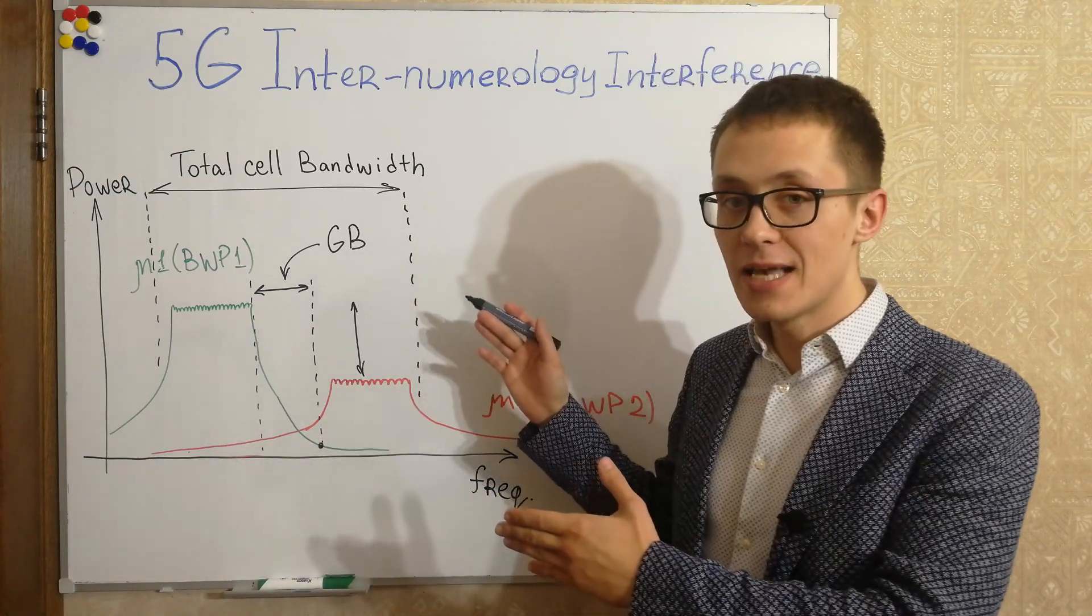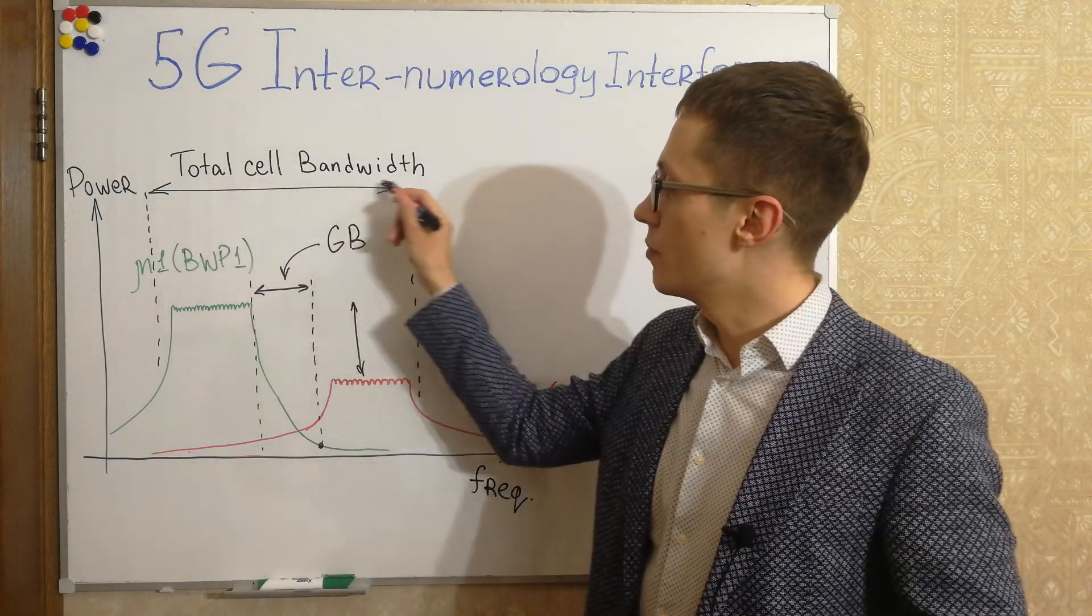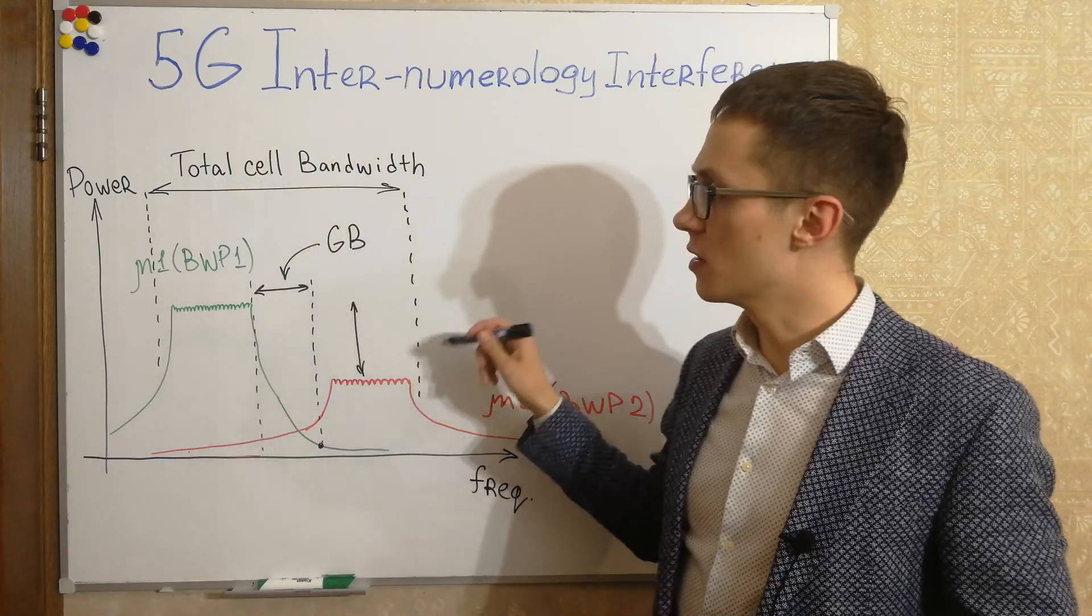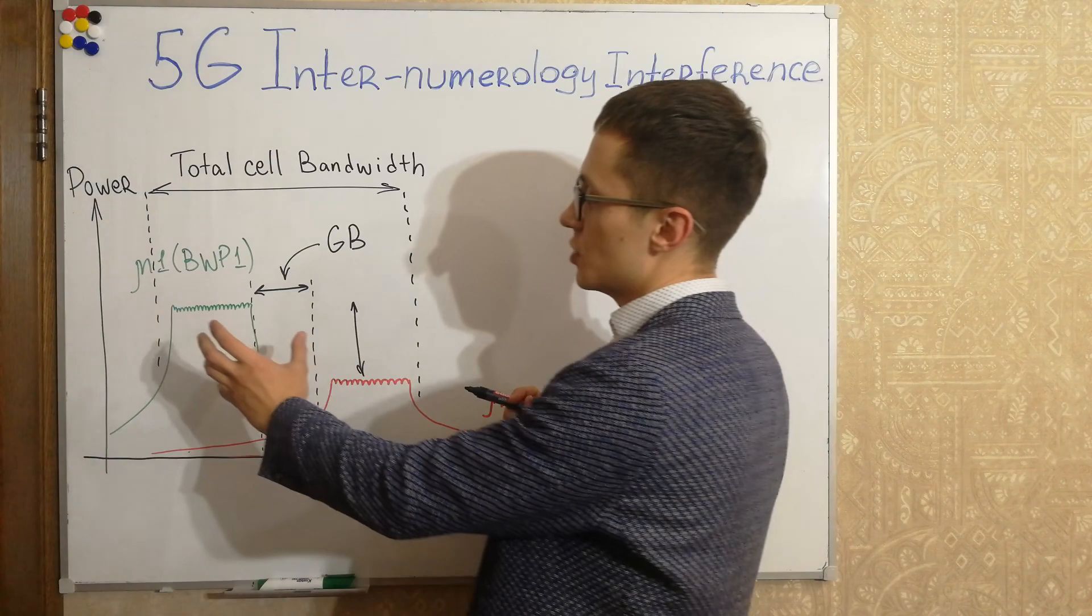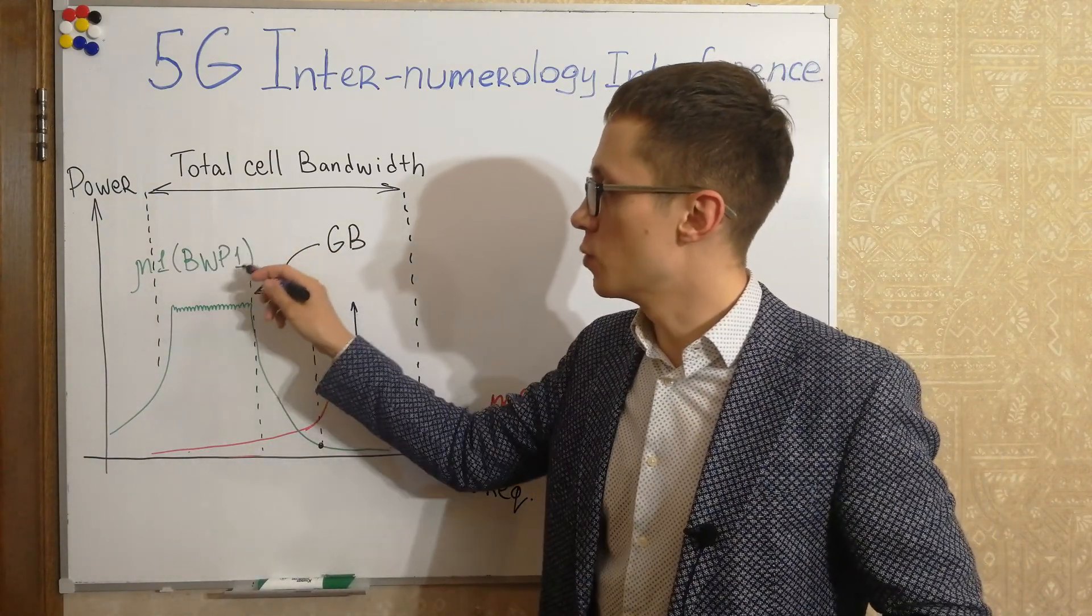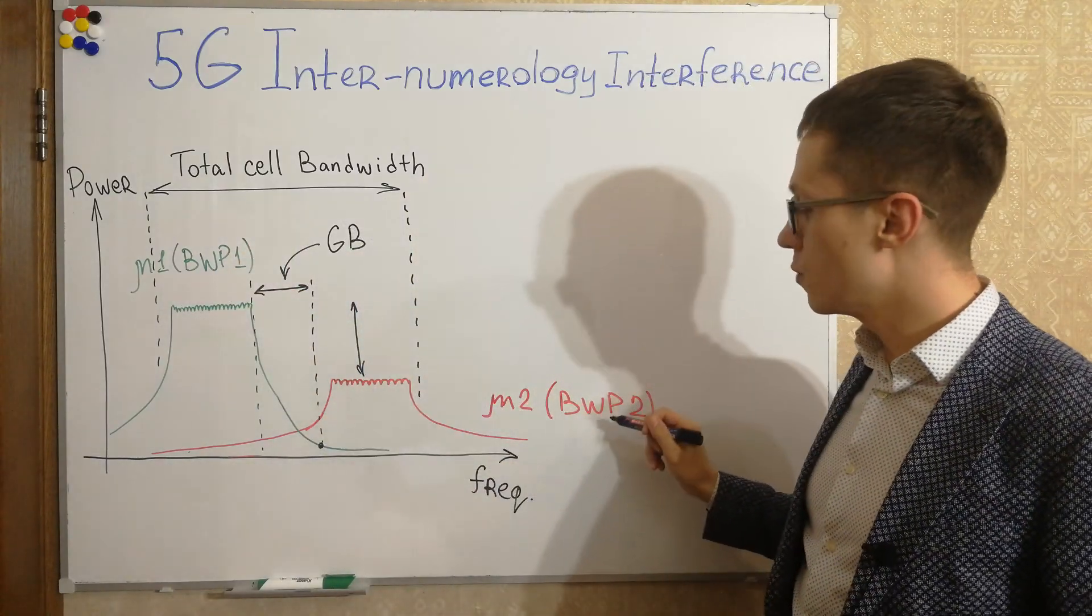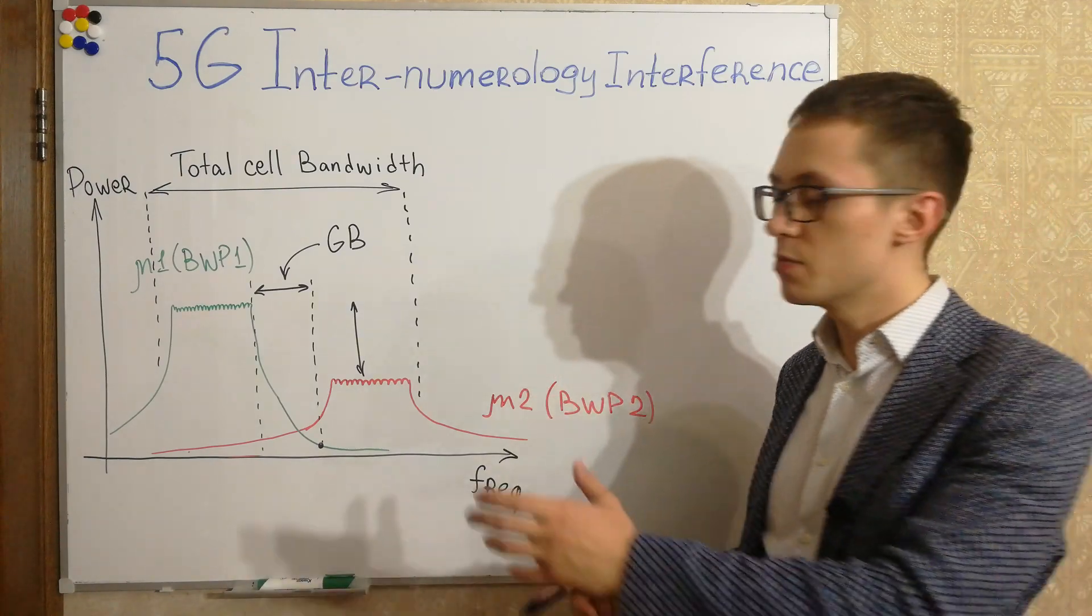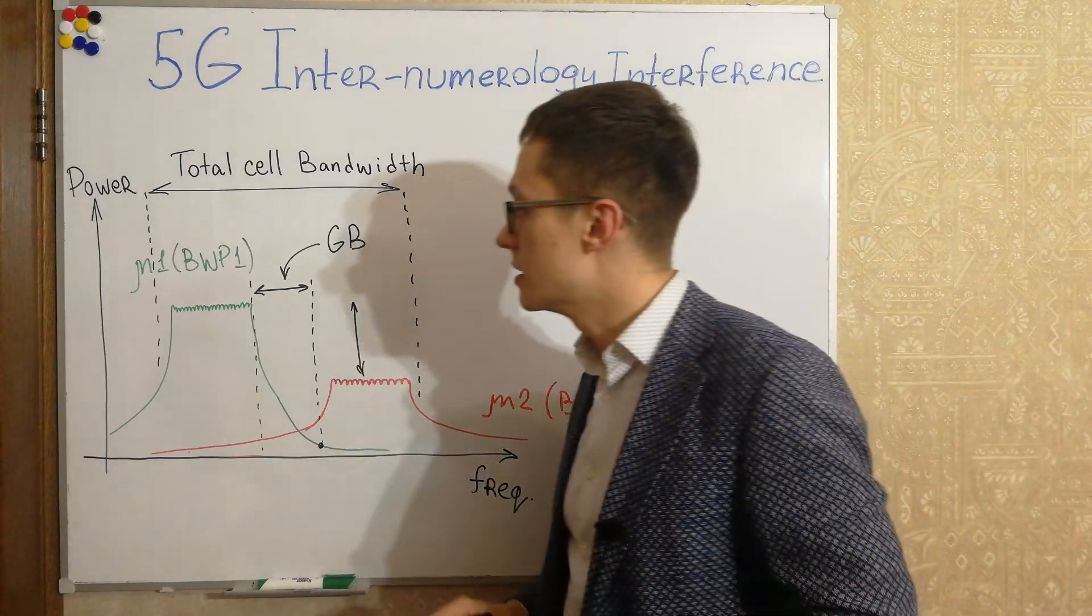Let's look at my example. Let's assume that we have total cell bandwidth. This is the total cell available bandwidth. This cell bandwidth has two bandwidth parts. Let's suppose this is bandwidth part 1 with numerology 1 and this is bandwidth part 2 with another numerology, or it can be the same numerology. In my example it doesn't matter.